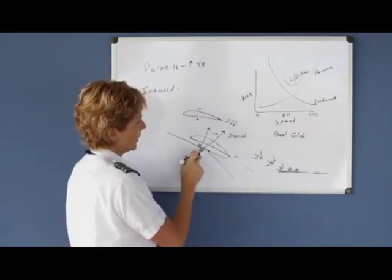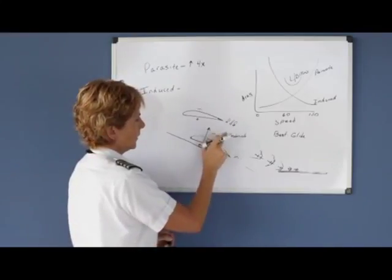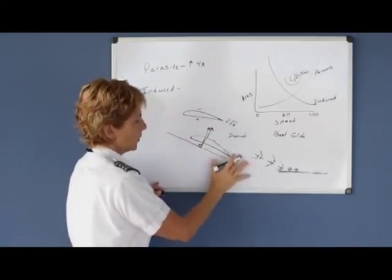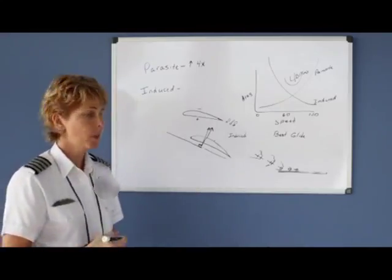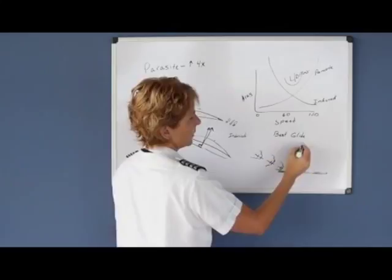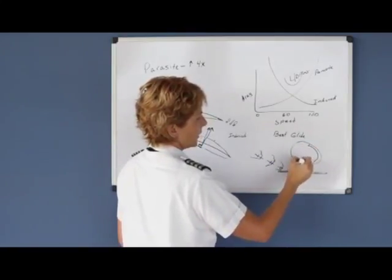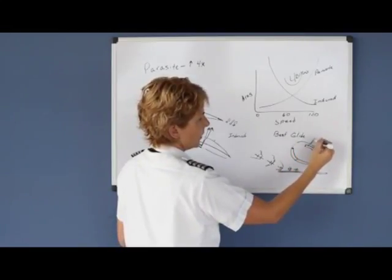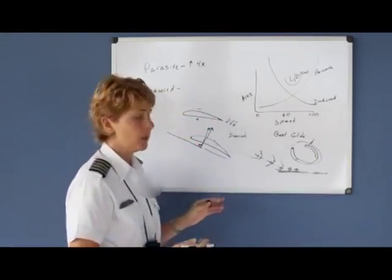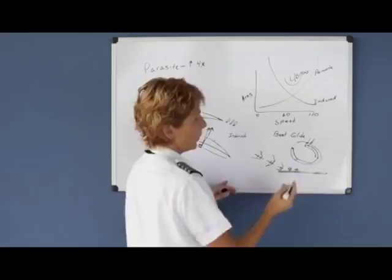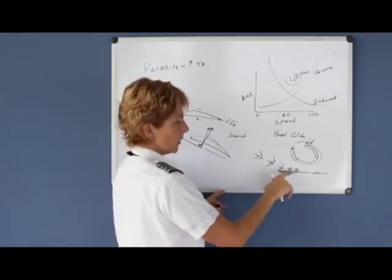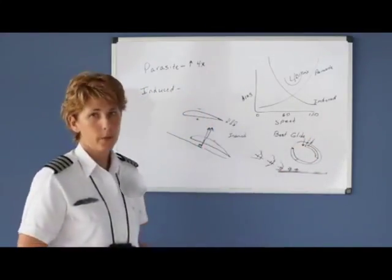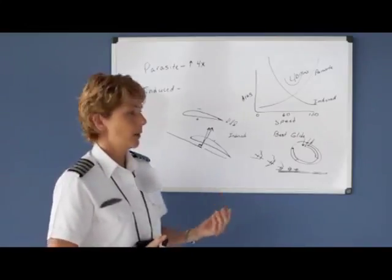If we eliminate those wing tip vortices, we reduce our induced drag, and we can fly in ground effect at a slower airspeed than we normally could. Looking at the airspeed indicator — with its green arc, yellow arc, red line, and white arc — the airplane typically stalls at the bottom of the green arc in clean configuration, and at the bottom of the white arc in landing configuration. But in ground effect, the aircraft may not stall until a speed below those arcs.